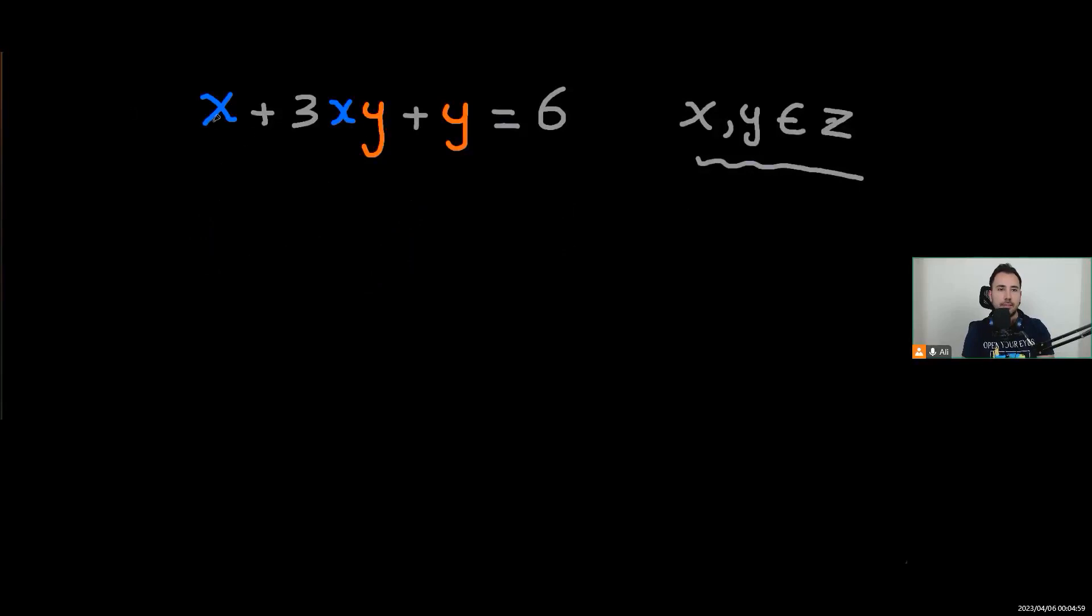To do that, let's just go and factorize x. It will be x times 1 plus 3y plus y equals 6. So it's going to be, see it's a good thing, x multiplied by this, but this y is extra. But what if I create one of these right over here? Then I could factorize it. Let's do it.